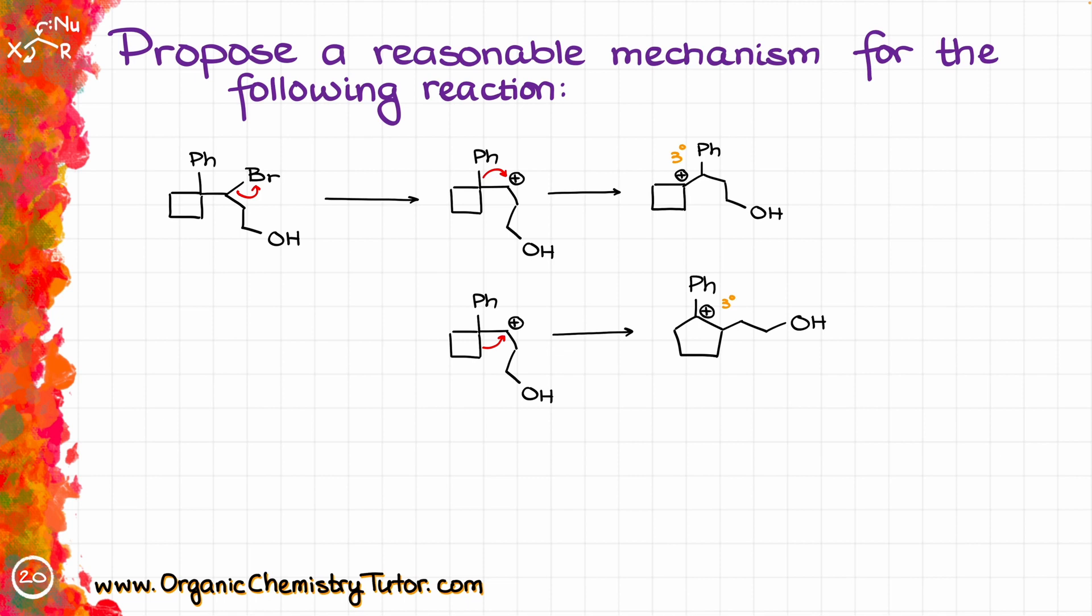The bottom pathway is going to give us a more stable carbocation, so the bottom competition is going to win. We're going to go with this rearrangement and discard the one where we're moving the phenyl group.